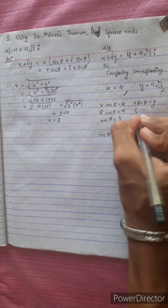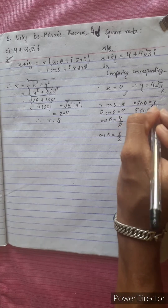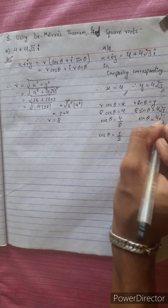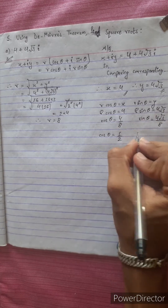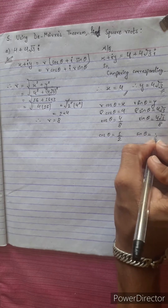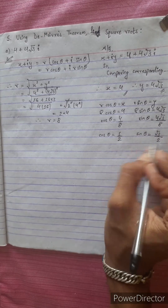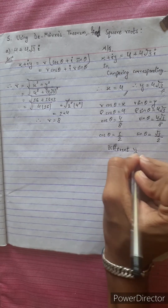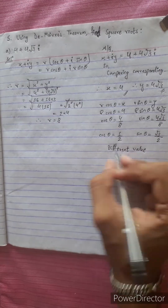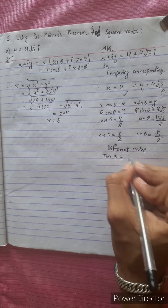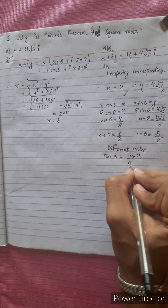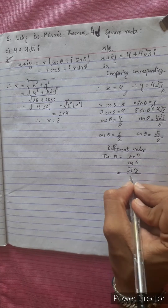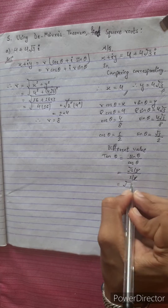R sin theta equals y. So 4 root 3 sin theta equals 4 root 3 divided by 8. Therefore sin theta equals root 3 by 2. We have sin theta equals root 3 by 2 and cos theta equals 1 by 2.